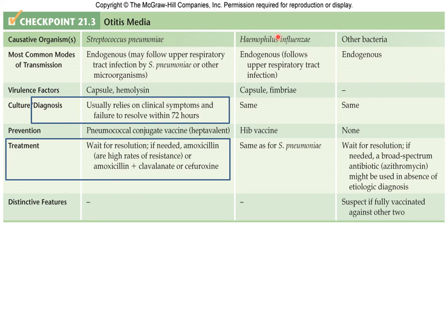Causative organisms: Streptococcus pneumoniae, non-typeable Haemophilus influenzae, and others. Treatment: amoxicillin or amoxicillin-clavulanic acid. Since amoxicillin resistance is found in 95–99% of the Jordanian population due to overuse, amoxicillin-clavulanic acid or cefuroxime should be used instead.